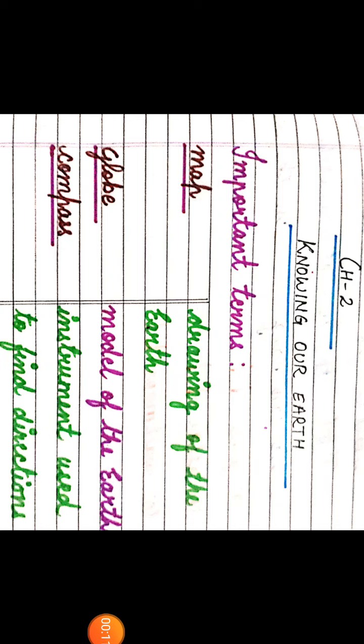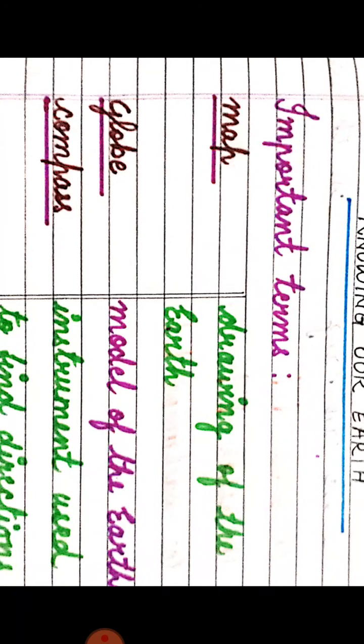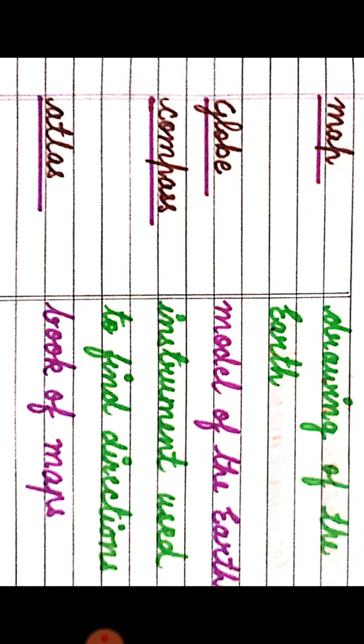The first one is map. Map is a drawing of the earth. Globe — globe is the model of the earth. Compass — compass is an instrument used to find directions. Atlas — atlas is a book of maps.